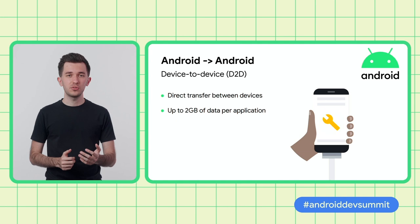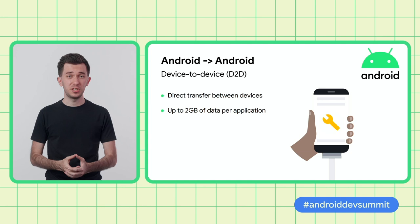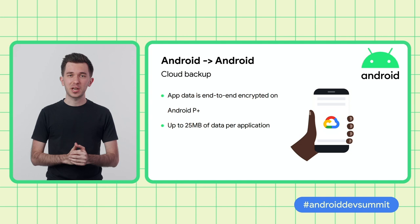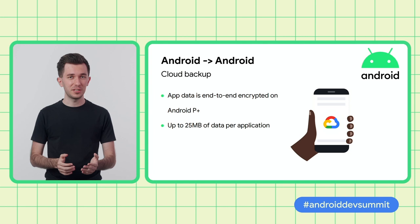For Android to Android switches, the users can also connect their devices by cable. We'll redownload all their apps, as well as transfer up to two gigabytes of data for each participating app in Backup and Restore. If the user doesn't have their old device at the moment, they can restore data from a cloud backup that has been created earlier. That is because app data on Android devices is regularly backed up to the cloud. These app data backups are end-to-end encrypted on devices running Android P and later, provided that the user has set a PIN, pattern, or password to unlock their screen.